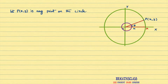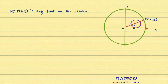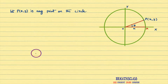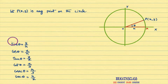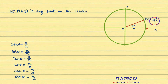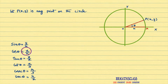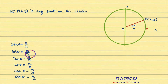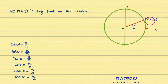I considered ray OA as the initial ray. I rotated OA through angle θ, then ray OP is formed with point P taken as (x, y). Then the six trigonometric functions are defined as: sin θ = y/r, where y is the y-coordinate of point P and r is the radius. cos θ = x/r, and tan θ = y/x.